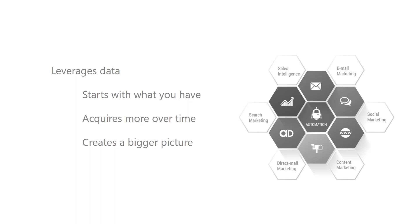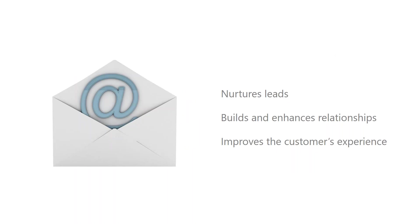You start to get a bigger picture about who these people are. A lot of times we'll have first name, last name, title, email address, maybe phone number, zip code — things like that. What's nice about marketing automation is it's specifically sending the right message so that the response you get helps to build information about the people in your database — what they like, what they don't like — and allows you to creatively move forward with messages that make sense. Marketing automation in its simplest form is about email marketing.